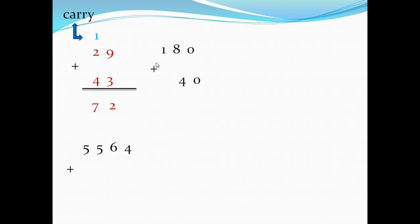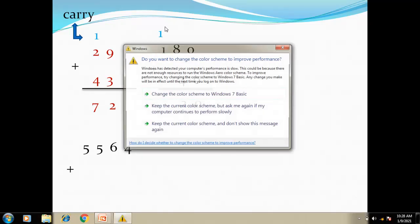Another one: three digits plus two digits. Start from units — zero plus zero equals zero. Eight plus four: count after eight — nine, ten, eleven, twelve. I have twelve — two digits — write two and carry one to the next digit. One plus one equals two.